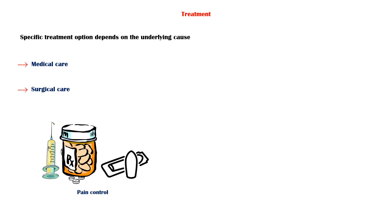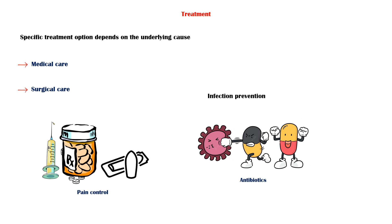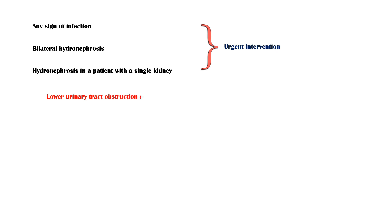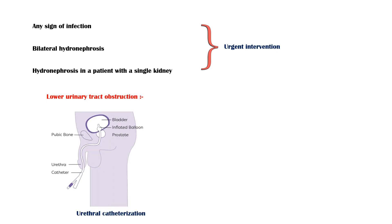The specific treatment of hydronephrosis depends on the underlying cause. In general, treatment can be divided into medical care and surgical care. Medical care includes pain control with analgesics and infection control with antibiotics. Any sign of infection, bilateral hydronephrosis, or hydronephrosis in a patient with a single kidney should warrant urgent intervention. If the obstruction is in the lower urinary tract, such as the bladder neck or urethra, urethral catheterization may be needed.